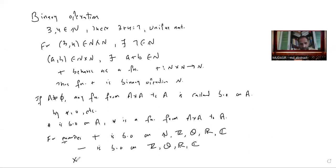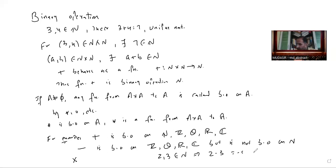Subtraction is a binary operation on ℤ and above, but it is not a binary operation on any subset of ℤ — specifically it is not a binary operation on ℕ. The reason: for (2, 3) belonging to ℕ, 2 minus 3 equals −1, which does not belong to ℕ. So the image of the ordered pair (2, 3) under the subtraction function does not exist, meaning subtraction is not a binary operation on ℕ.